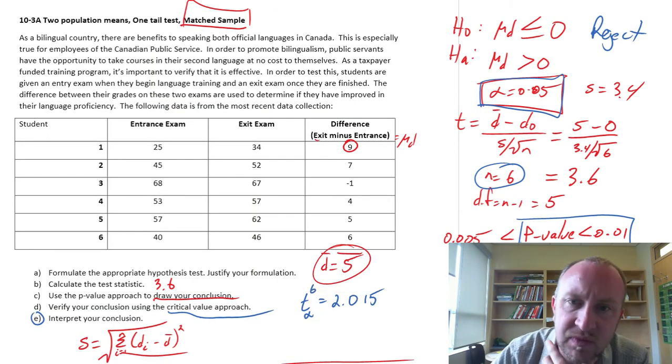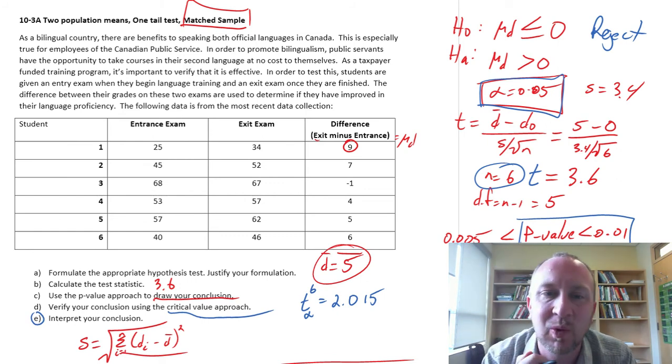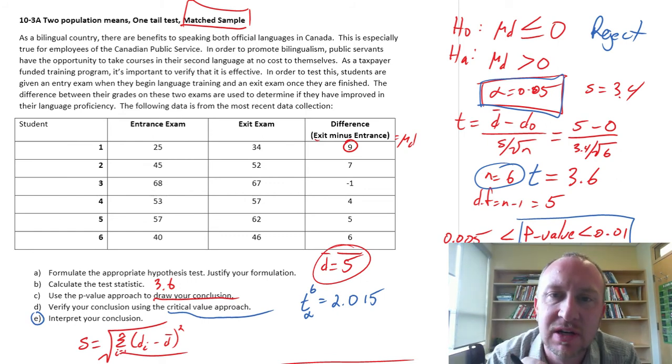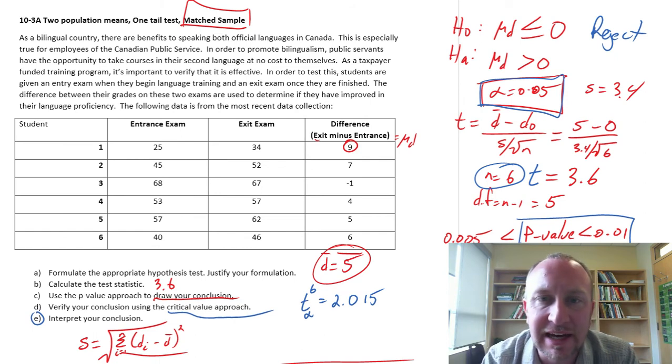And so once again, with a test statistic here, this test statistic was 3.6. That's well beyond that critical value, so that confirms our conclusions. We comfortably reject that null hypothesis.